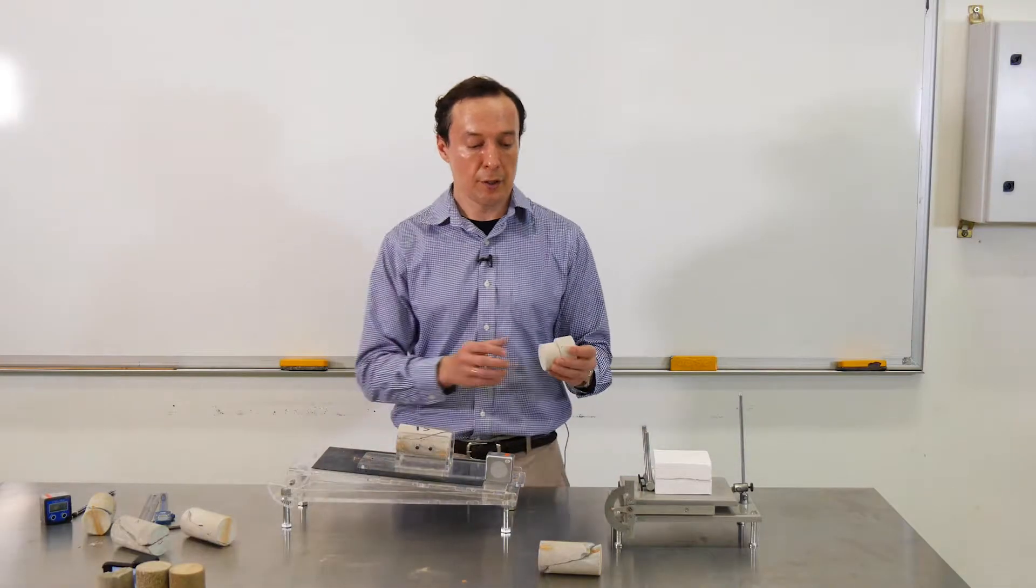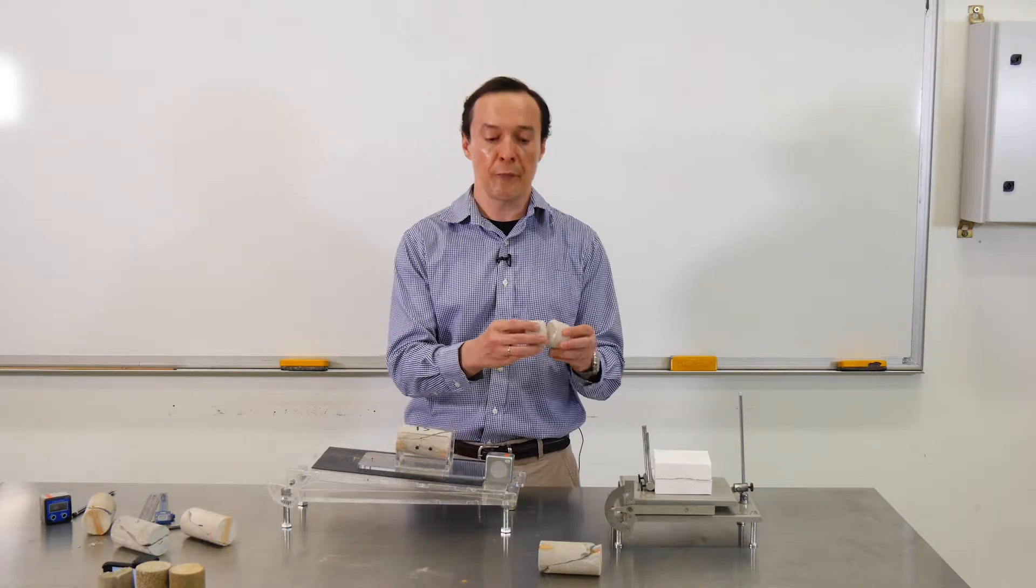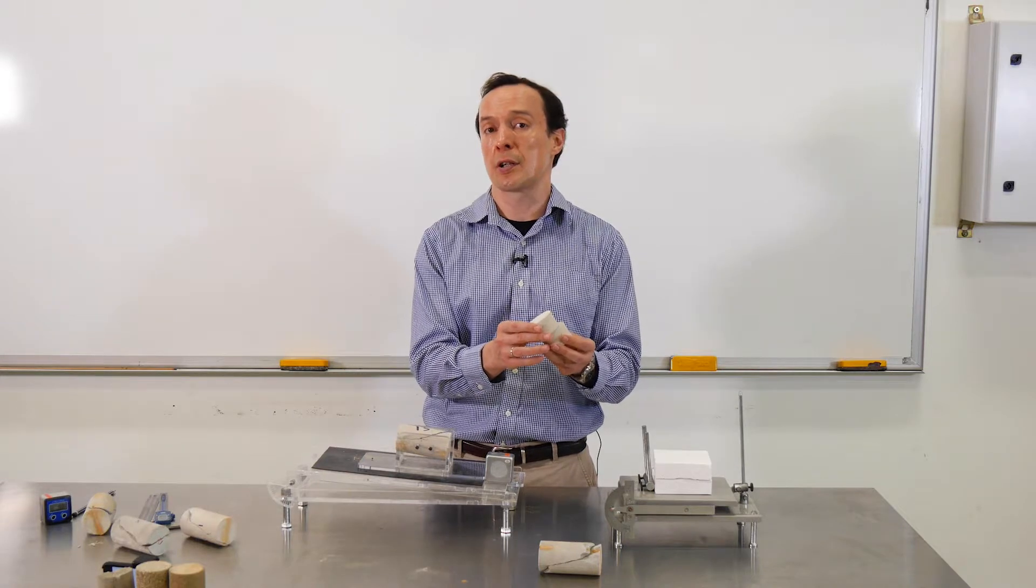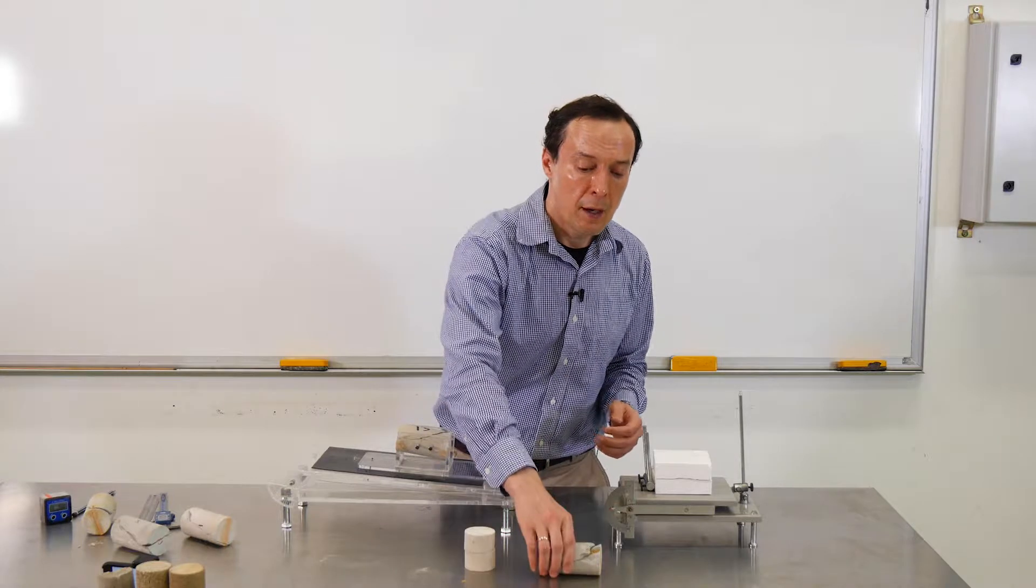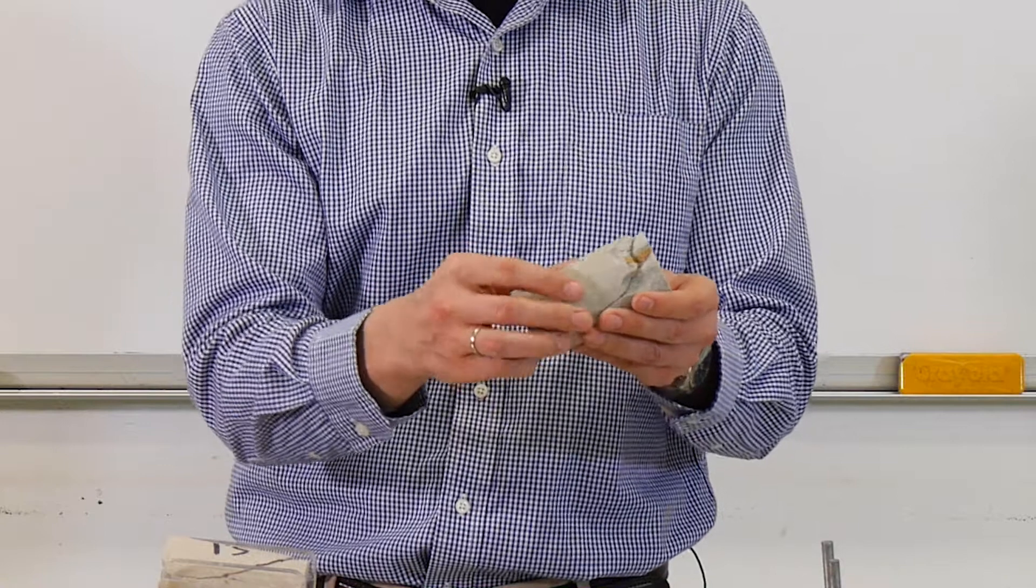When we deal with rocks and when we use nice smooth and polished surfaces, we will see that friction component will be about 25-30 degrees. However, when the surface is irregular, ridged like the one we have here,